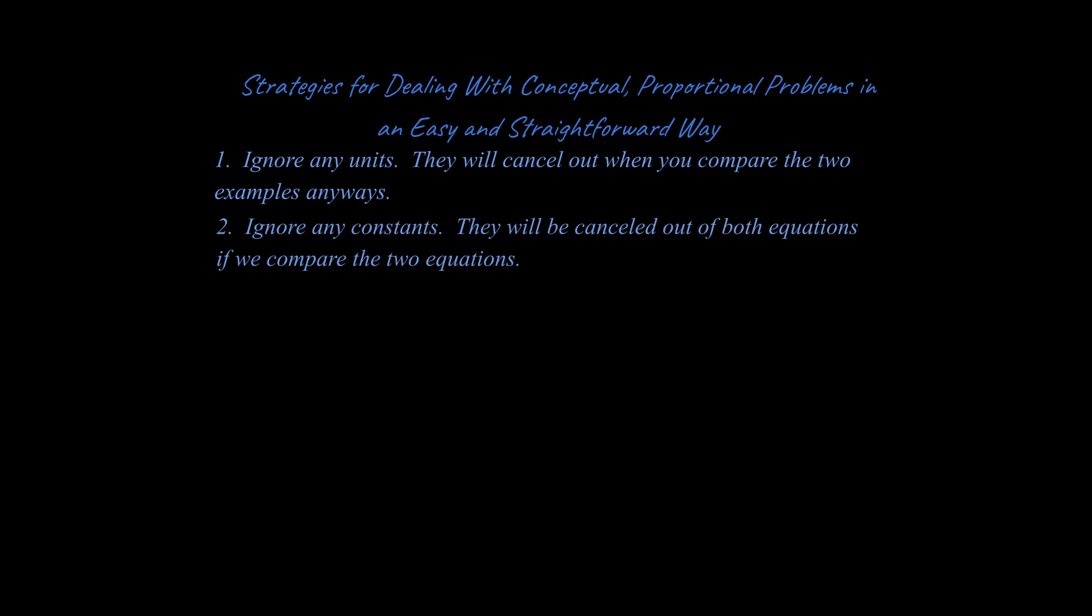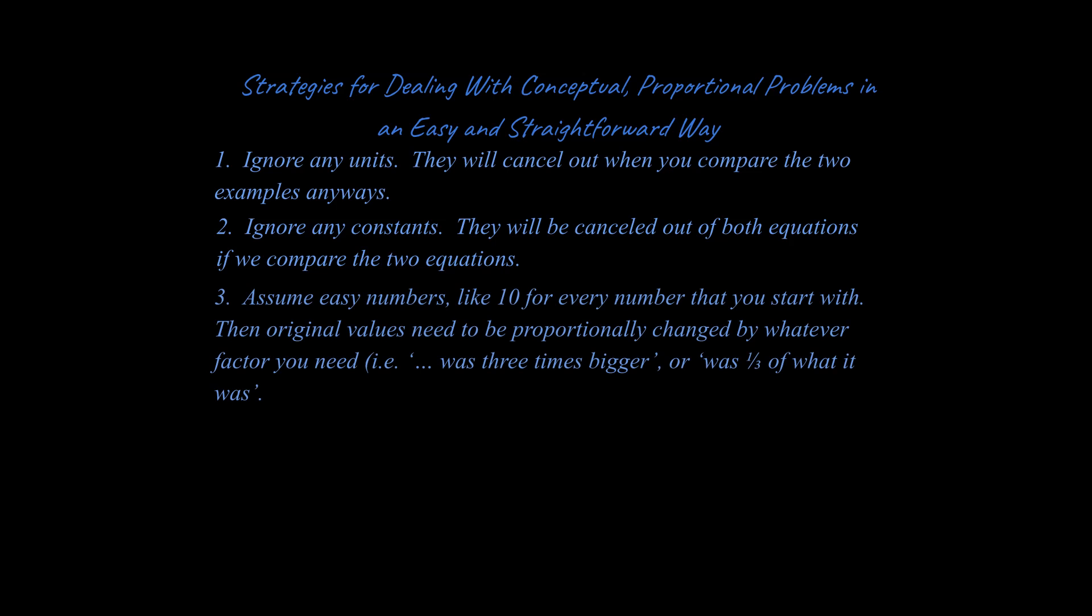Next, we're going to ignore any constants. That's because I'm going to pick two examples to work with. Any constant that is in each equation doesn't really matter because you can divide it out. In other words, if I had one equation on the left and another equation on the right, and I multiply both equations by three, and I wanted to compare the results of both of those equations, you could actually divide that three out. That three becomes irrelevant if you're going to compare two relative examples.